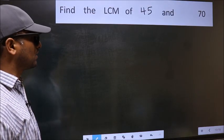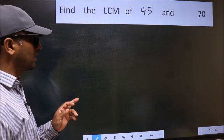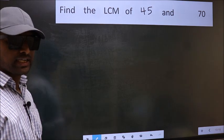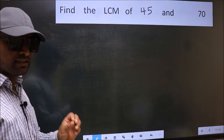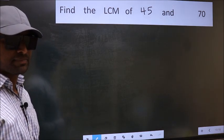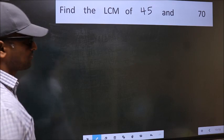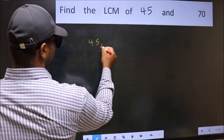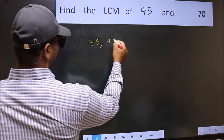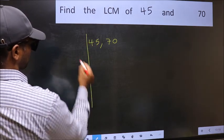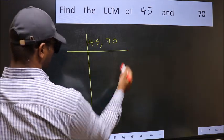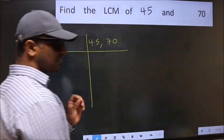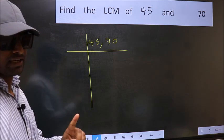Find the LCM of 45 and 70. To find the LCM, we should frame it in this way — write 45 and 70 side by side. This is your step 1.